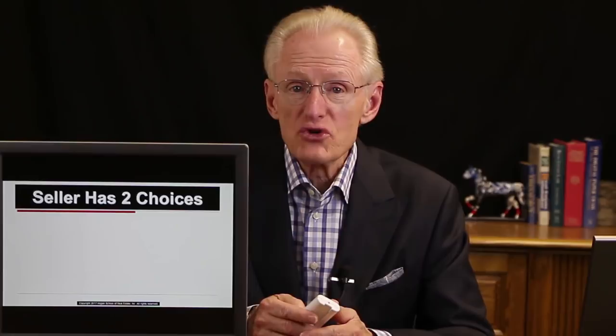What happens if the land contract is in default? The seller has two choices: judicial foreclosure — same as in a mortgage — or a forfeiture action, a non-judicial action. Forfeiture is a private action between buyer and seller where the seller tries to take the property back. There is no public auction on the courthouse steps with a forfeiture. Importantly, forfeiture is unique to land contracts — you don't have forfeiture in a mortgage or deed of trust.